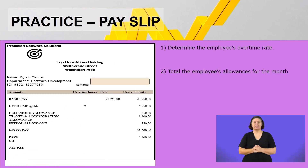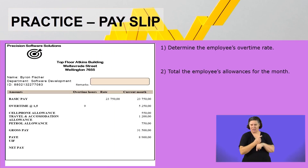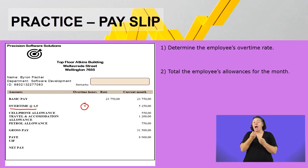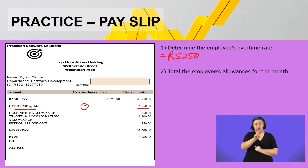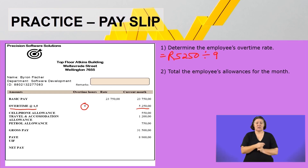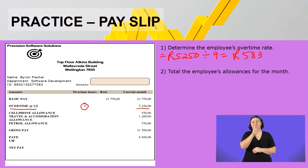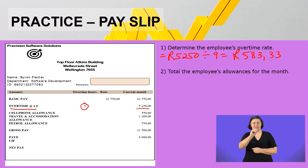The next item we're going to look at is pay slips. Question number one: determine the employee's overtime rate. After getting familiar, we can clearly see overtime is being paid at time and a half. Overtime hours is nine, and for the current month the employee got paid 5,250 rand. So you take 5,250 and divide it by the number of hours worked: 5,250 divided by nine equals 583 rand and 33 cents per hour.